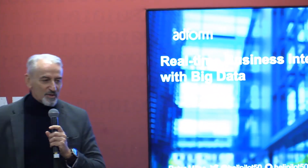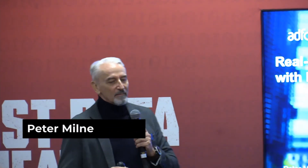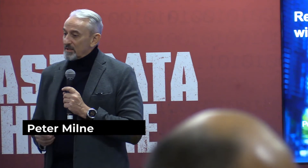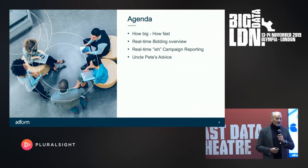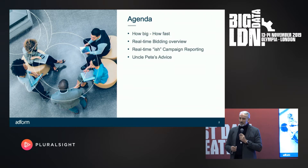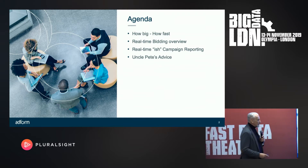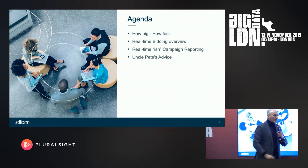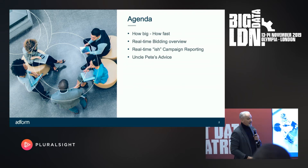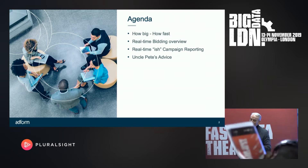So let me introduce myself. My name is Peter Milne. You can tell by the way I speak that I'm neither American nor British, and there's a prize at the end of the talk to work out which nationality I am. Today I'm going to talk about real-time business intelligence for the advertising industry. I'll cover how big and how fast things are, give you an overview of ad tech, talk about real-time-ish campaign reporting, and then give you some Uncle Pete's advice — because I'm old, I'm Uncle Pete.